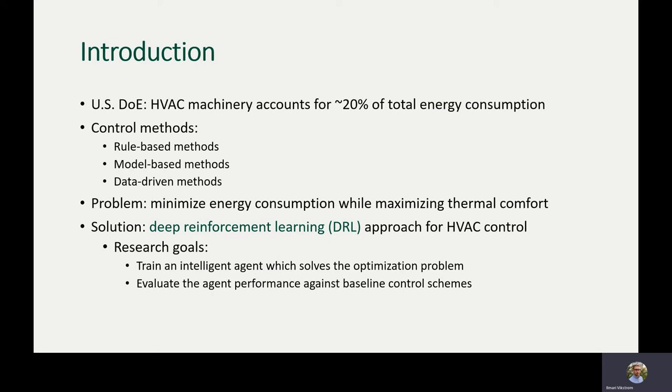Traditionally, HVAC machinery has been controlled by simple rule-based methods. They are simple to implement and easy to maintain, but they are not very flexible or smart. Various model-based methods have also been proposed; some require very accurate building models, which is not often feasible, and some also require human supervisory, which is quite costly. Nowadays there are multiple data-driven methods made possible by advanced metering infrastructure. In this work we are going to implement one such method — a deep reinforcement learning approach for HVAC control.